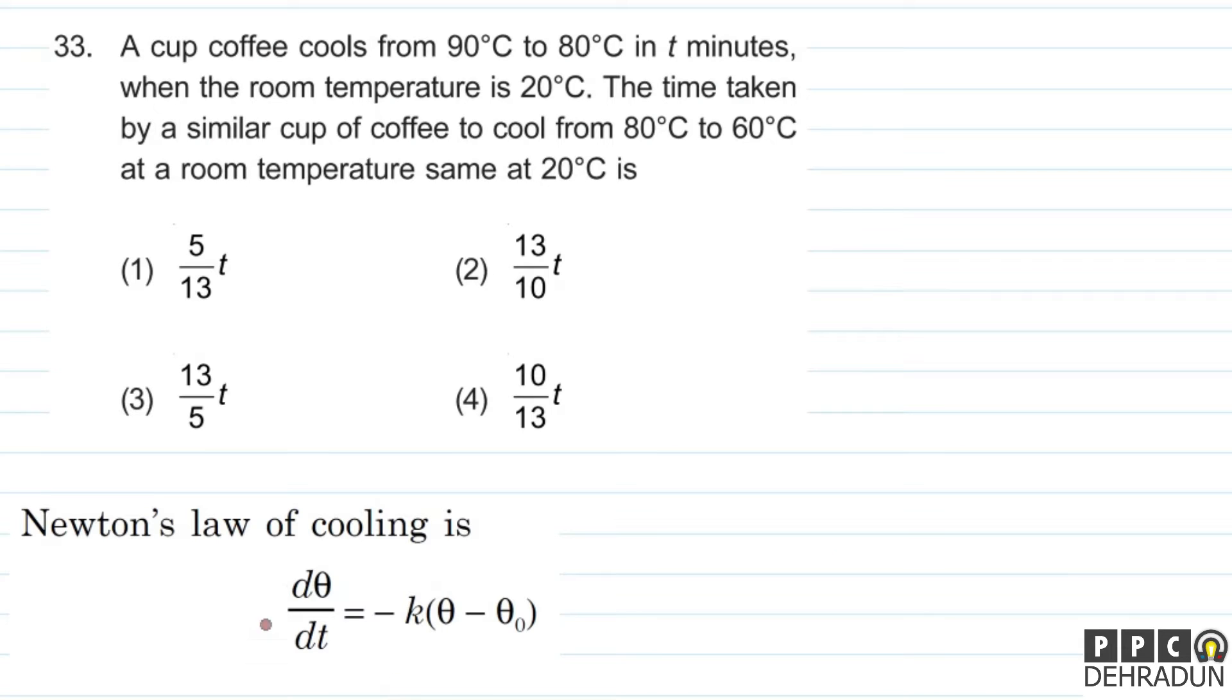For such questions, what do we use? Newton's law of cooling, which says dθ/dt = -k(θ - θ₀). And here we can use an approximation. If we use approximation, then we can write dθ/dt as Δθ/Δt.